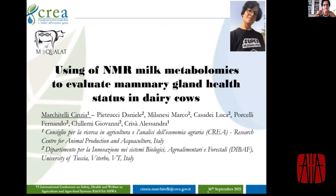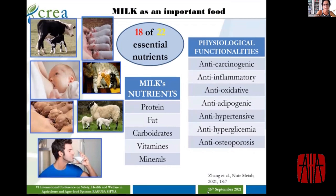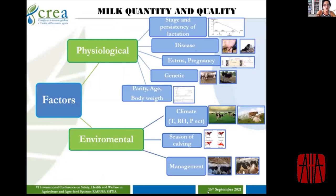Today I explain some research about using NMR analysis to detect metabolites to evaluate mammary gland health status. Milk is an important food for the newborn of all mammalian species, important for child growth and also for adults. Milk contains 18 of the 22 essential nutrients and has many physiological functionalities. Milk quantity and quality are affected by different physiological and environmental factors such as disease, stress, pregnancy, breed, species, temperature, altitude, and season of calving.